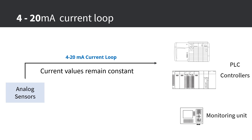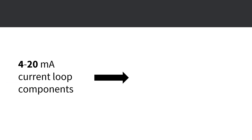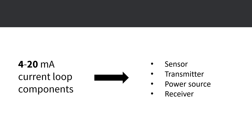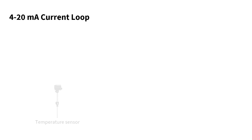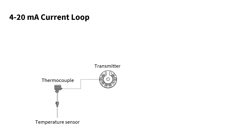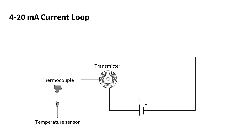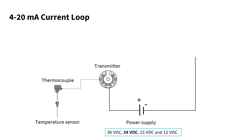A current loop in industrial settings has the following components: sensor, transmitter, power source, and a receiver. A 4 to 20 milliamps current loop looks like this — an example is having a temperature sensor, a thermocouple, to measure a process temperature. A transmitter converts the variable signal from the sensor into current, and the transmitter is what regulates the current in the loop. The power supply provides voltage in the circuit — common voltages are 36V DC, 24V DC, 15V, and 12V, with 24V DC being the most common.